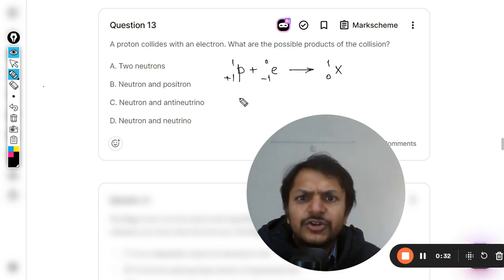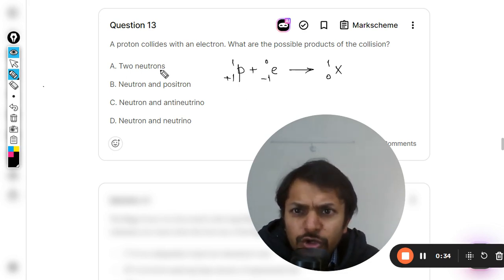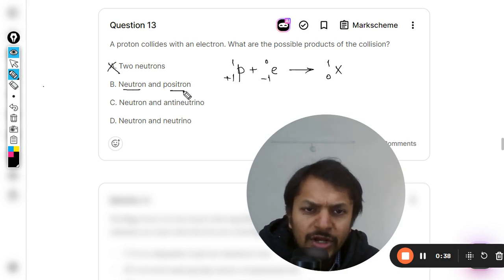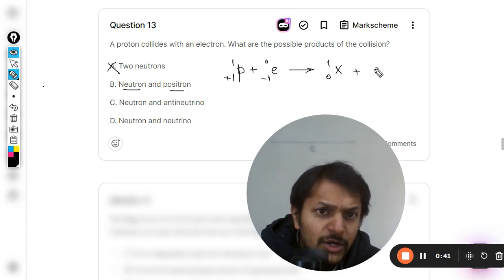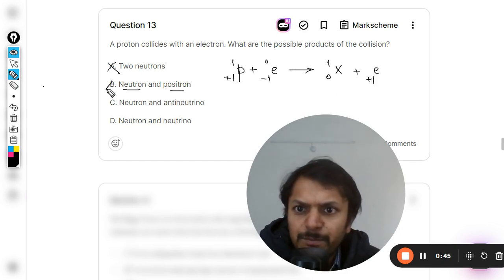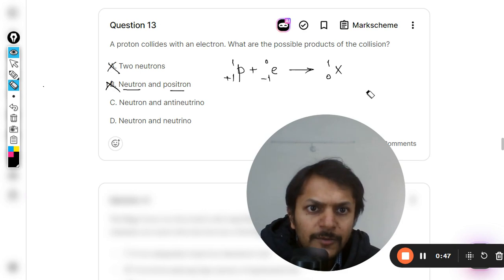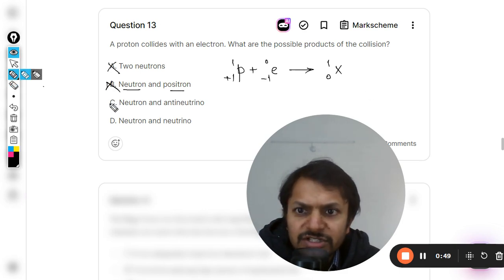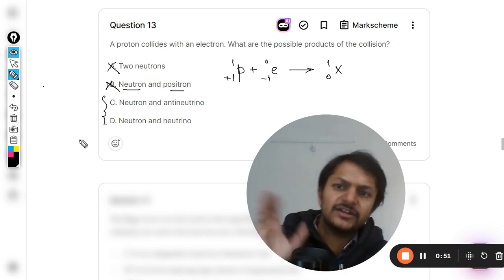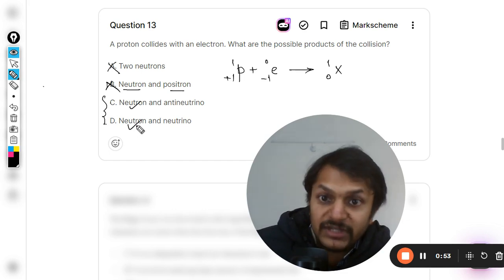So two neutrons doesn't make any sense. Proton, neutron, and positron doesn't make any sense because if there will be a positron here, the charge will not be conserved. So B is also wrong, and so C and D. Your correct answer is hidden here. So neutron is okay, but yes.